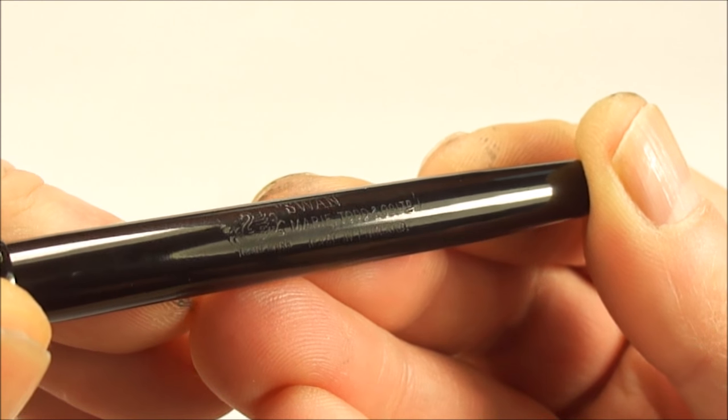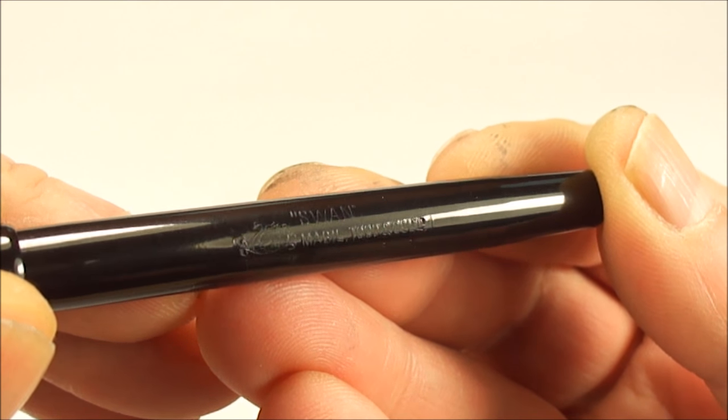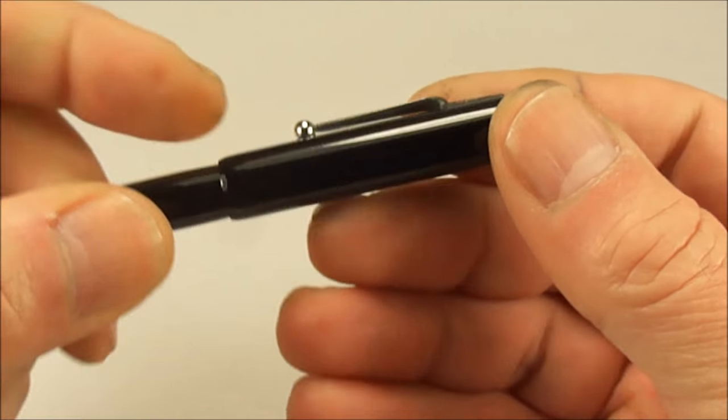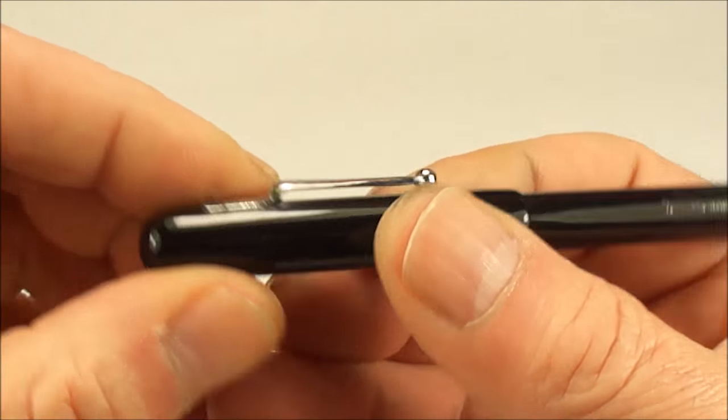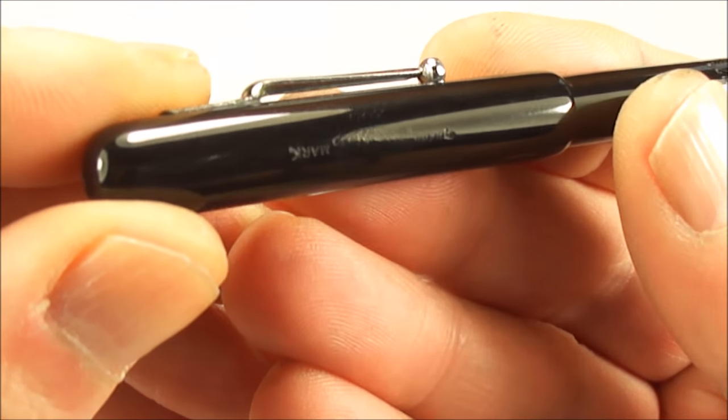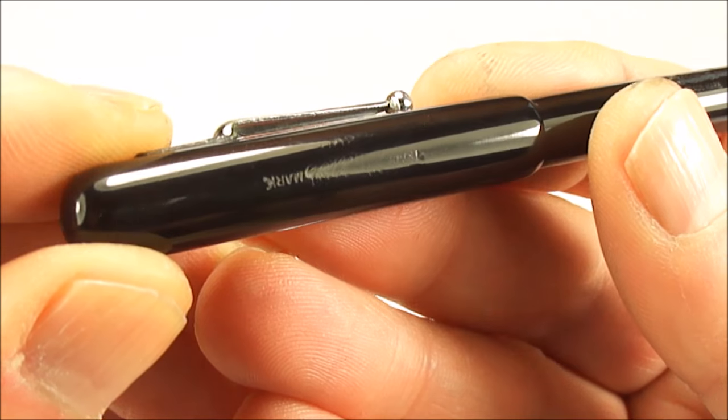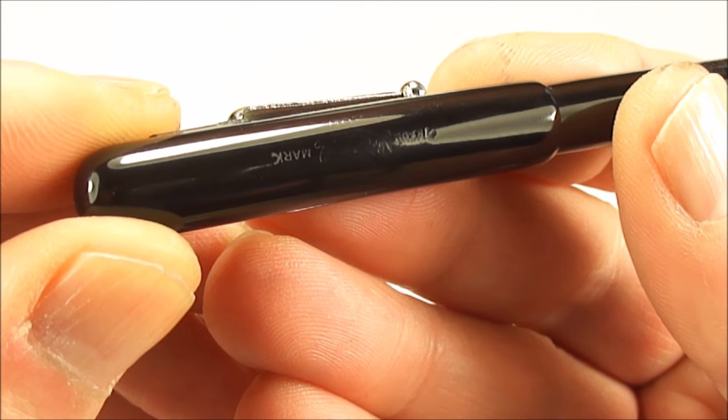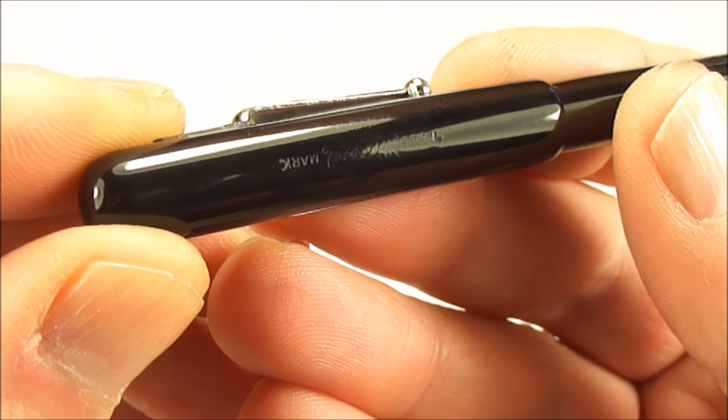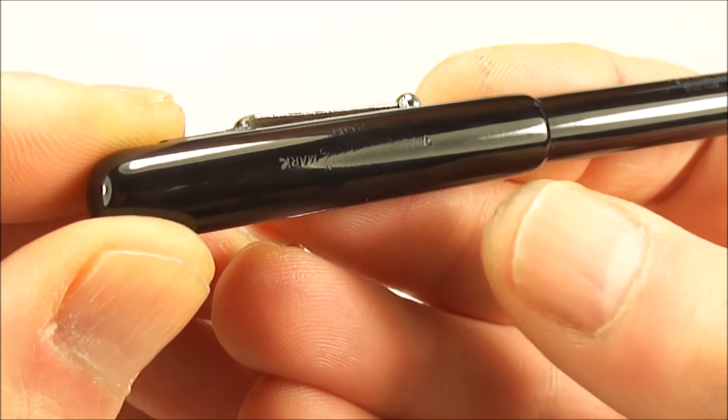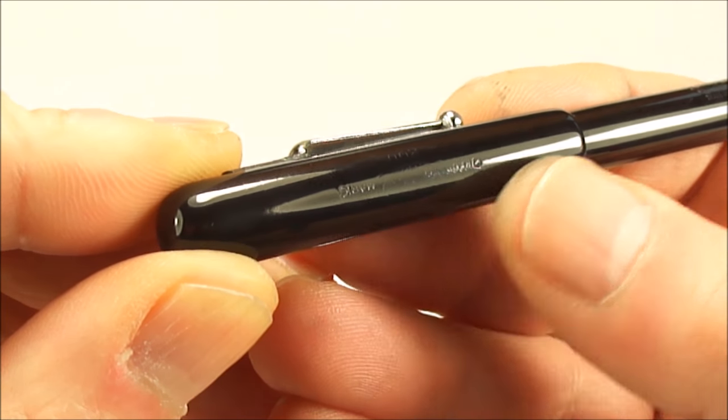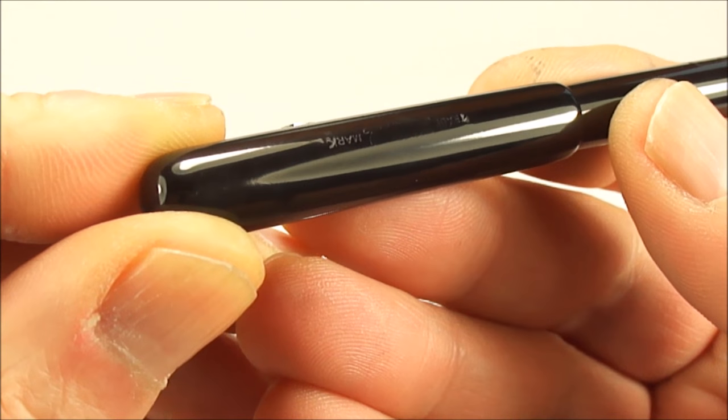What we've also got is if we turn it round, again a little bit worn on one side, which is quite expected for this age of pen. But it does say trademark, and in the middle it would have had a Swan logo.